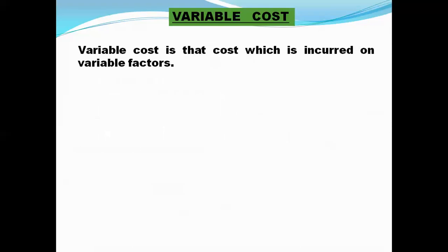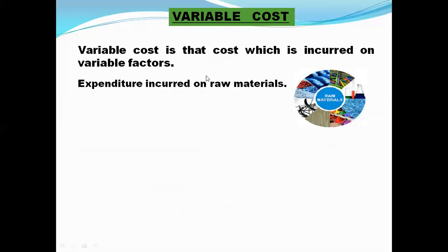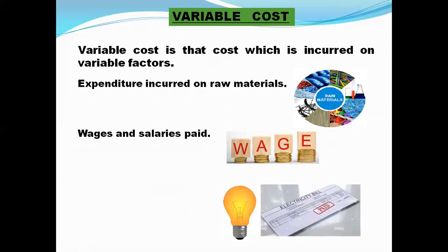Now we come to variable cost. Variable cost is that cost which is incurred on variable factors. For example, raw materials — if a firm buys raw materials it incurs an expenditure, and the more it produces the more raw materials it buys, so it depends on the output level. Next, wages and salaries paid to staff — more laborers employed means more wages. Also electricity bill is a variable cost.